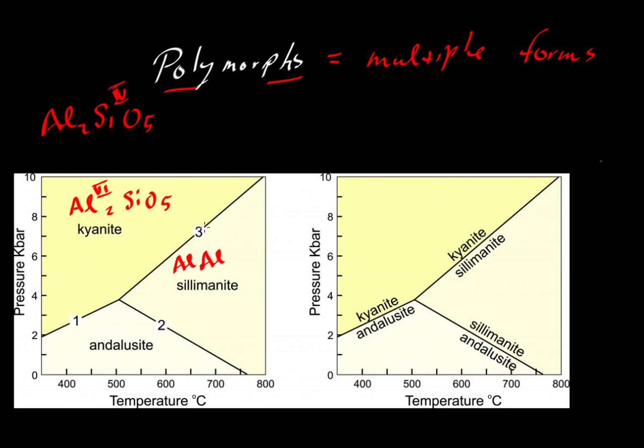The reason is because here it has different coordination numbers. One aluminum is in sixfold coordination, and the other is in fourfold coordination. So we still have Al2SiO5, but writing aluminum twice because those aluminums have different structural sites.